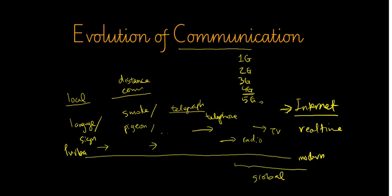Let's look at some history of how the communication system evolved from early times until now, the modern era. In the early times, communication normally happened within a small group or tribe, where people living locally used their own language or signs to communicate with each other. As time evolved, there were needs to move outside their areas and communicate with other tribes, and so they started to have basic distance communication.